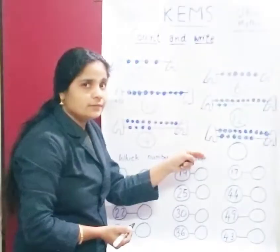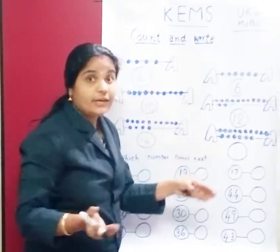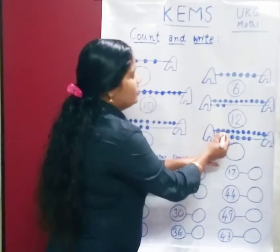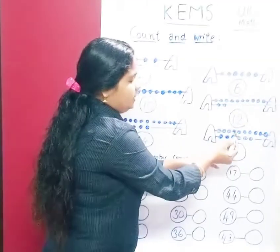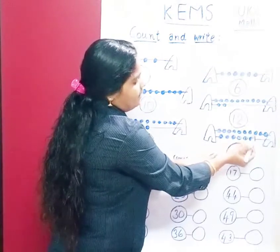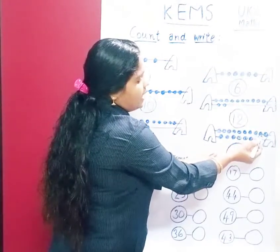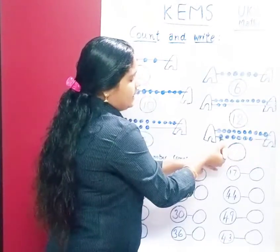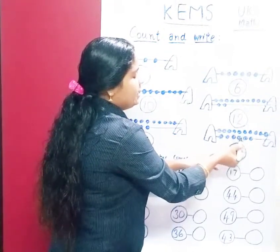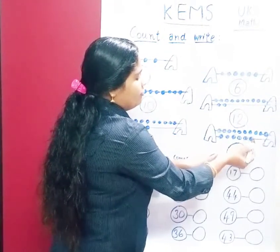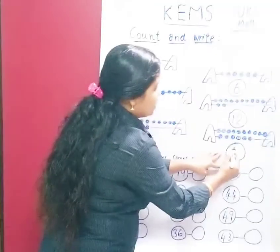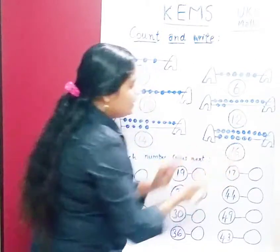How many beats? Count with me, children, all of you. 1, 2, 3, 4, 5, 6, 7, 8, 9, 10, 11, 12, 13, 14, 15, 16. So 16 beats are here.